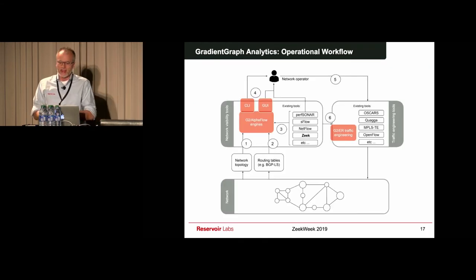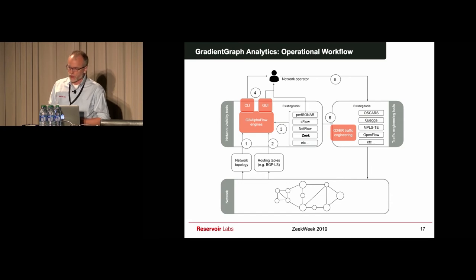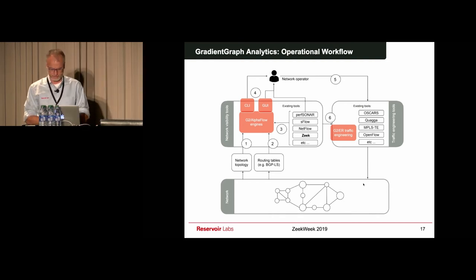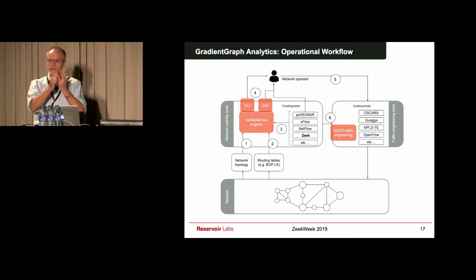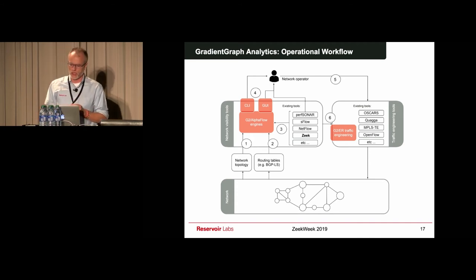Now, to integrate something like grading graph analytics into a network, you would have some kind of workflow like this where you have the network, your analytics, and then ultimately your traffic engineering tools back to the network. The inputs to grading graph are three. You need routing information, you need topology information, and then you need flow information. And this is in the third item that Zeek takes an important role.